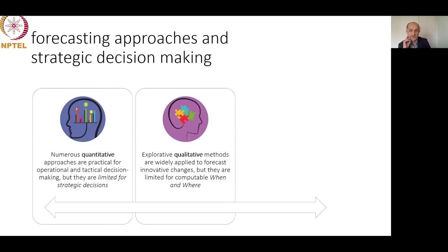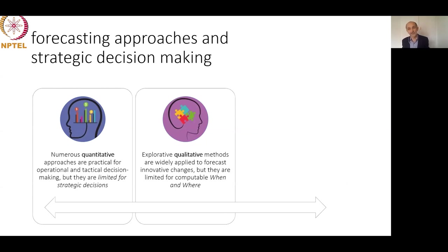Qualitative methods like Delphi arrays and other judgment methods are widely applied to forecast innovative changes, but have limited ability to answer when and where. For example, many people talk about 3D printing, but to answer when 3D printing will be the dominant manufacturing technology in India — qualitative methods alone cannot answer that. The general idea is to combine both quantitative and qualitative methods to arrive at clear answers for strategic decision-making about technology management.